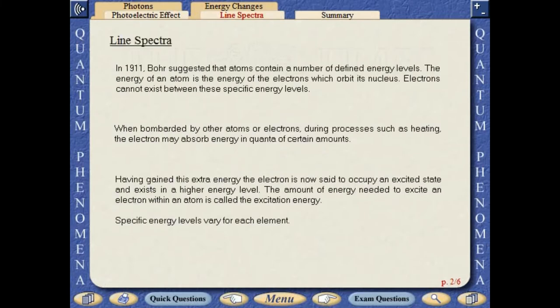In 1911, Bohr suggested that atoms contain a number of defined energy levels. The energy of an atom is the energy of the electrons which orbit its nucleus. Electrons cannot exist between these specific energy levels.